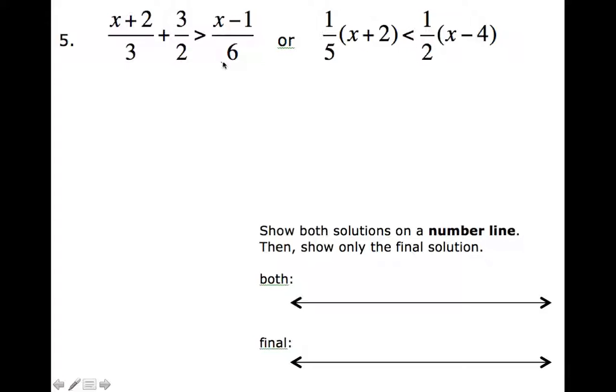I see a 3, a 2, and a 6. I'm trying to think of a common multiple of 3, 2, and 6. Because if I multiply by that multiple, it will cancel away all these fractions. 3, 2, and 6 all go into 6. So I'm going to multiply everything by 6.